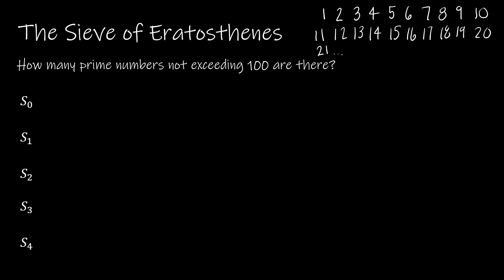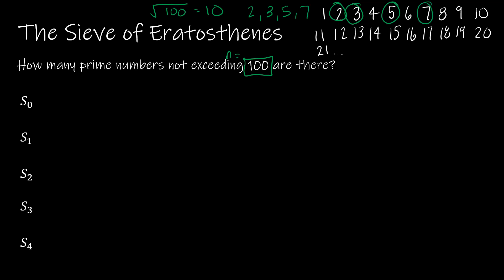We're going to look at one last example using the Sieve of Eratosthenes. To review: we take n — the numbers not exceeding a certain value, here n = 100 — and find the square root of 100, which is 10. We look for prime numbers less than 10: that's 2, 3, 5, and 7, since the next prime is 11, which exceeds 10. So we're looking at primes less than the square root of n.